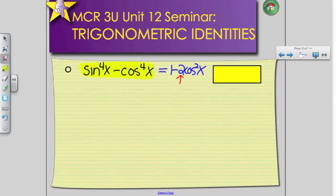Okay, so this is a difference of square situation. I know that sine to the 4th x can be broken up, trial and error, into sine squared x times sine squared x. And cosine to the power of 4x can be broken up into cosine x, cosine squared x, and cosine squared x.